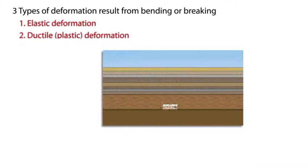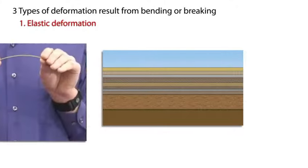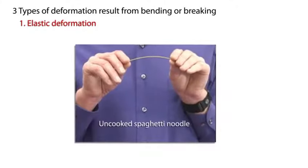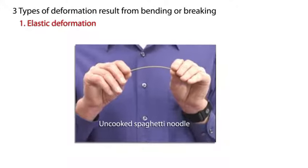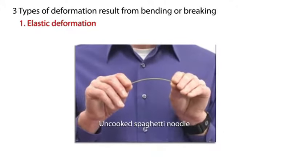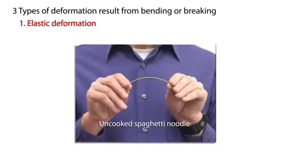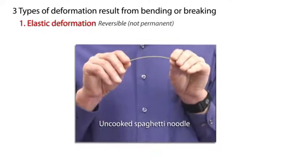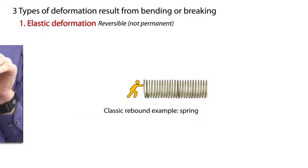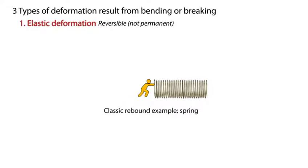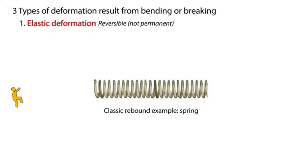Let's explore the process of elastic deformation first. We'll use a strand of uncooked spaghetti. You can deform the spaghetti by applying a compressive force to both ends. When the force is removed, the spaghetti returns to its original shape — a process called elastic rebound.